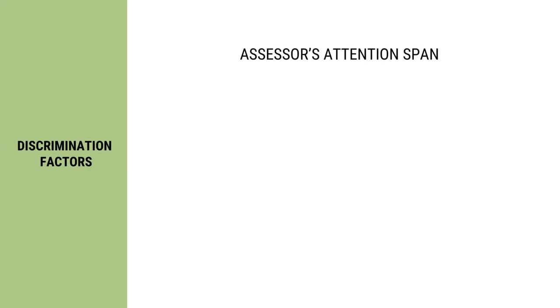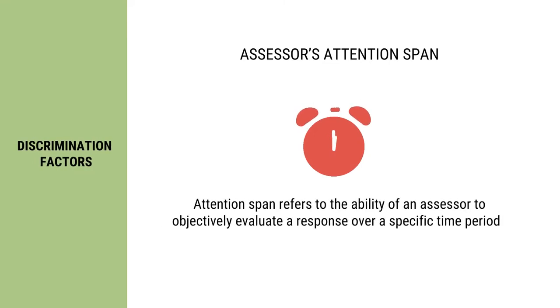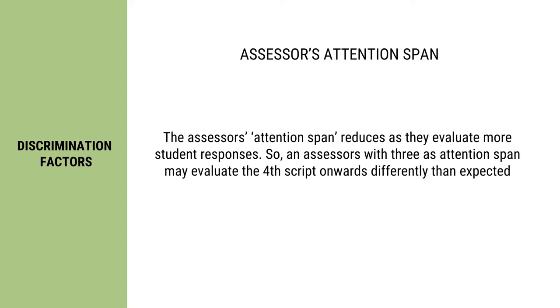The next discrimination factor is the assessor's attention span. Efficient assessors stand apart from inefficient assessors because of their attention span. Attention span refers to the ability of an assessor to evaluate an assignment within a specific period of time. Some evaluators may evaluate 2-3 assignment responses at one go, and some may evaluate 4-5 at one go. An assessor's attention span reduces if they evaluate more student responses. For example, an evaluator with an attention span of 3 is likely to evaluate the 4th assignment response differently than expected, which will adversely affect the evaluation and grading of the assignment response.